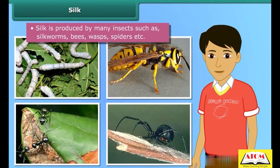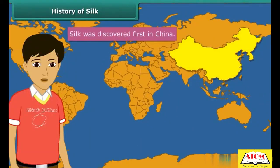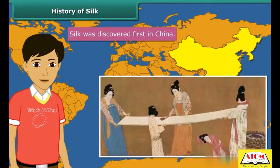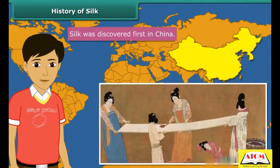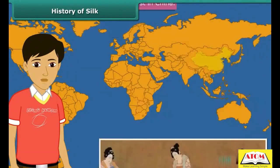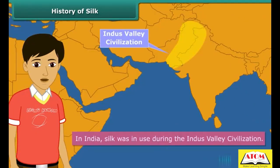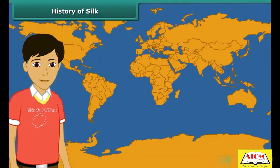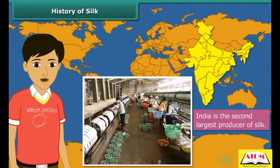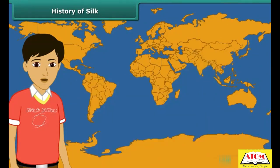Silk was first discovered in China by a Chinese emperor as far back as 3500 BC. In India, there is evidence that silk was in use during the Indus Valley civilization. Today, India is the second largest producer of silk; the bulk of it is produced in Karnataka. India is also the largest consumer of silk in the world.